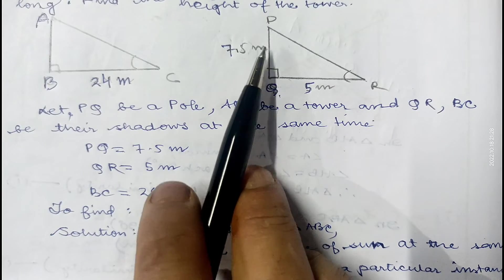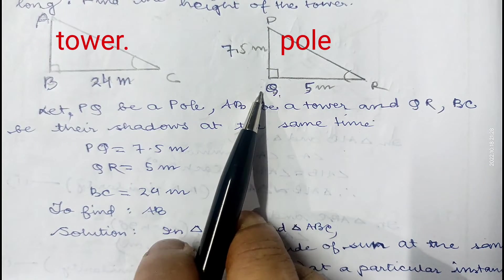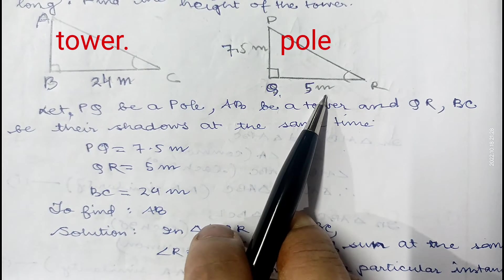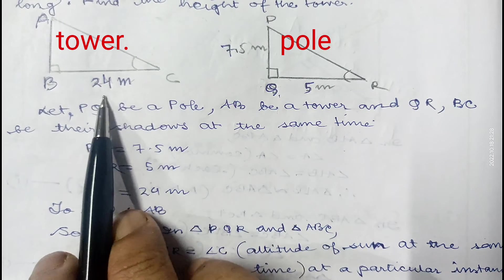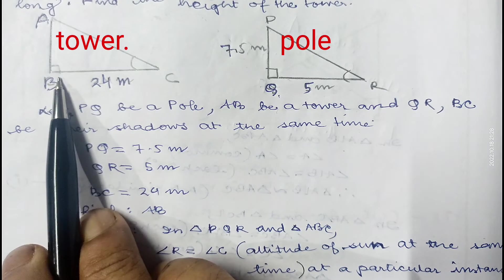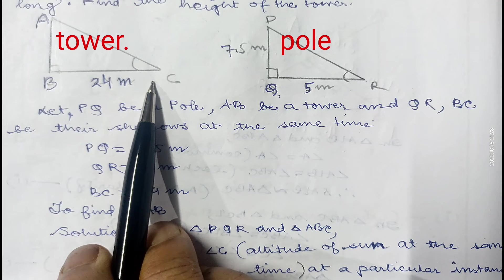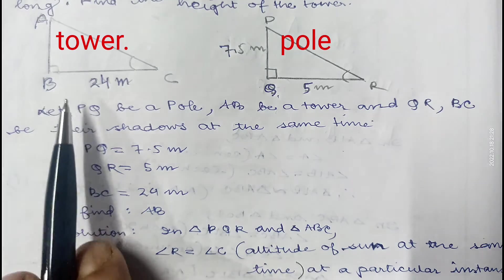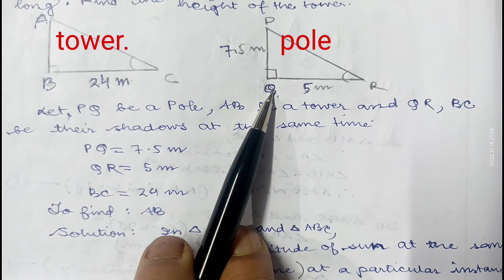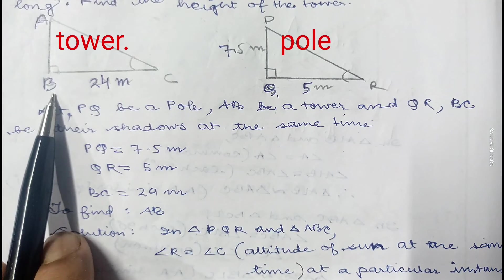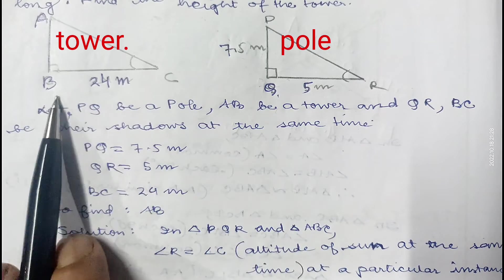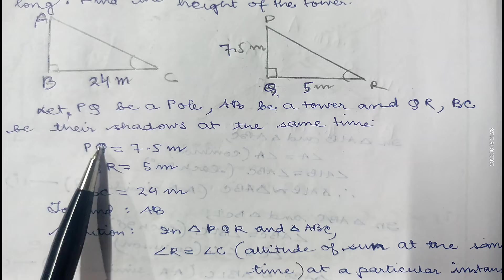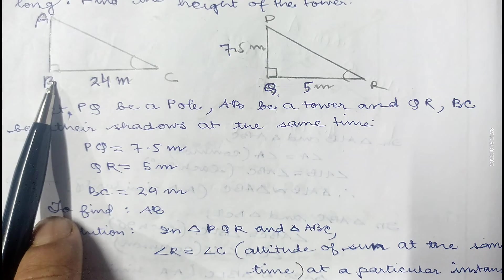As given in the question, a vertical pole of length 7.5 meters casts a shadow of length 5 meters on the ground, and at the same time a tower casts a shadow of 24 meters on the ground. We have to find the height of the tower. Let PQ be the pole and AB be the tower. QR and BC are the lengths of their shadows, and we have to find the height of the tower, that is AB.